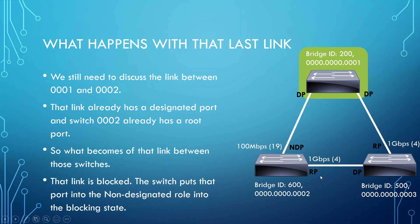If 002 receives BPDUs listing 001 as the root bridge via two links, it knows there are two paths to reach the root bridge, meaning there's still a loop. So it must keep that interface blocked. If the blocking port ceases receiving BPDUs, 002 would move that port out of blocking into the forwarding state, which would cause a loop. Only a designated port or a port in the forwarding state — like a root port — sends and receives BPDUs.